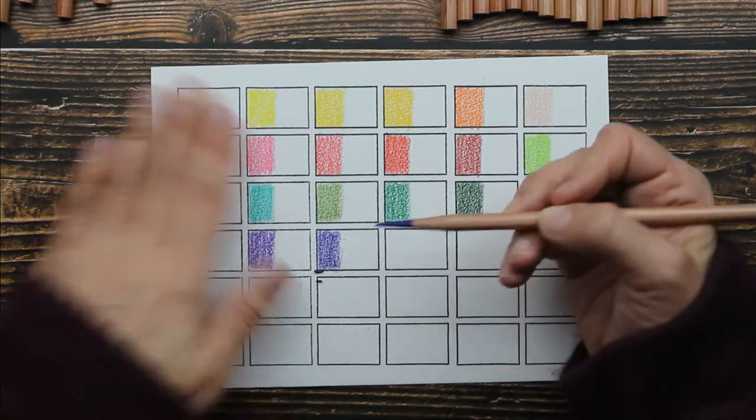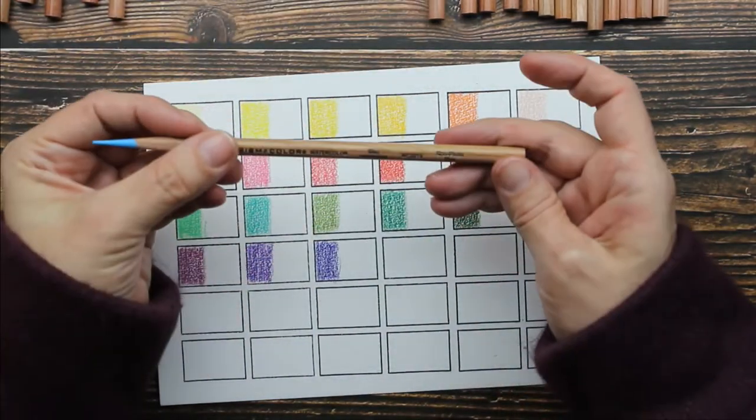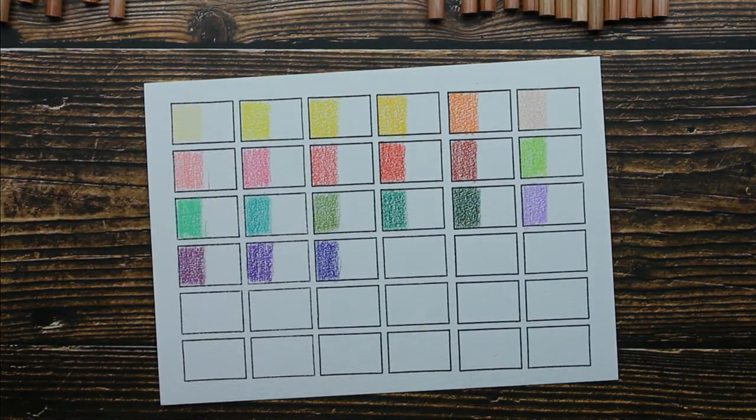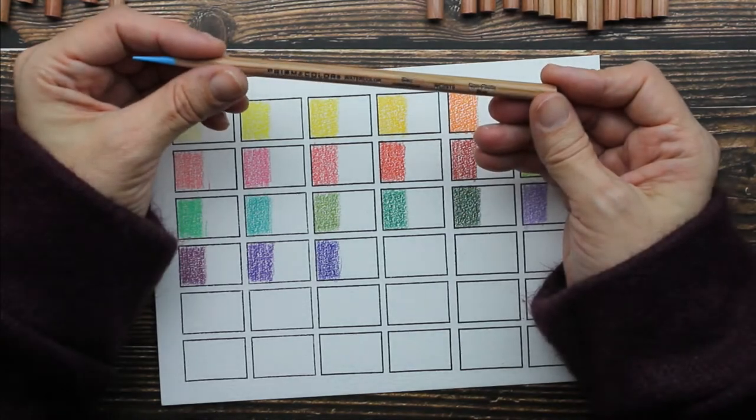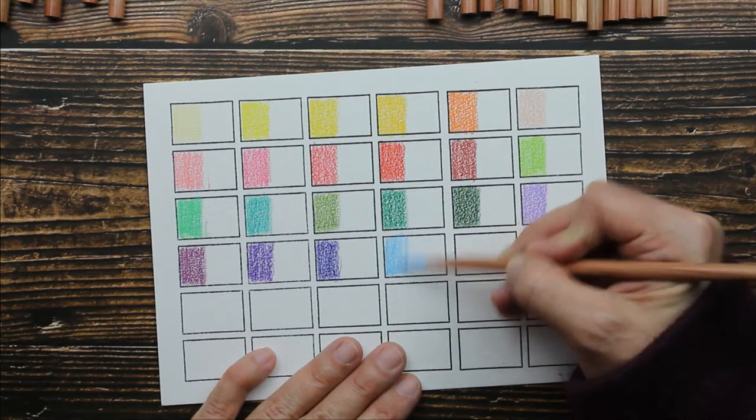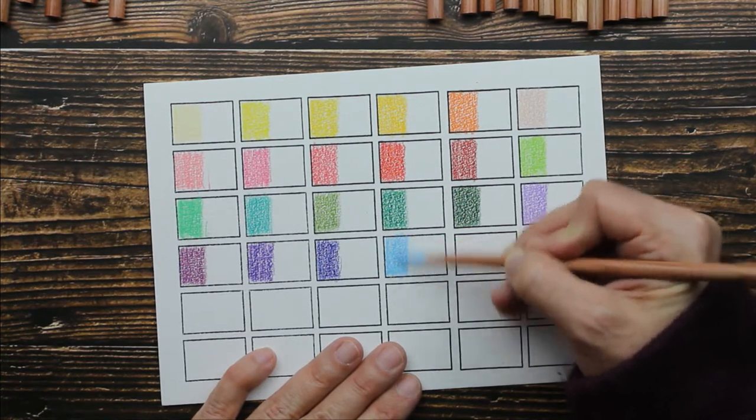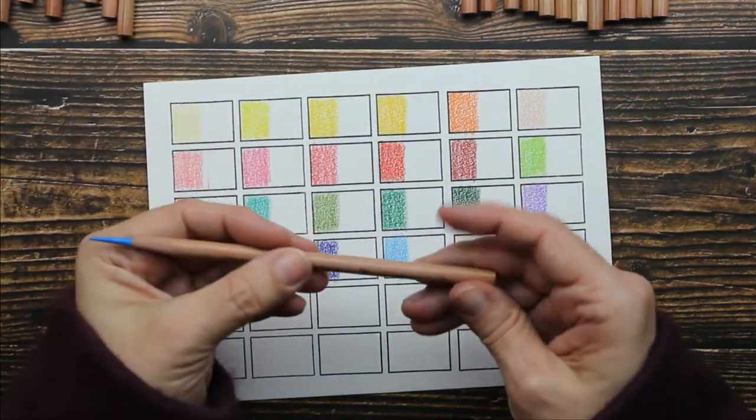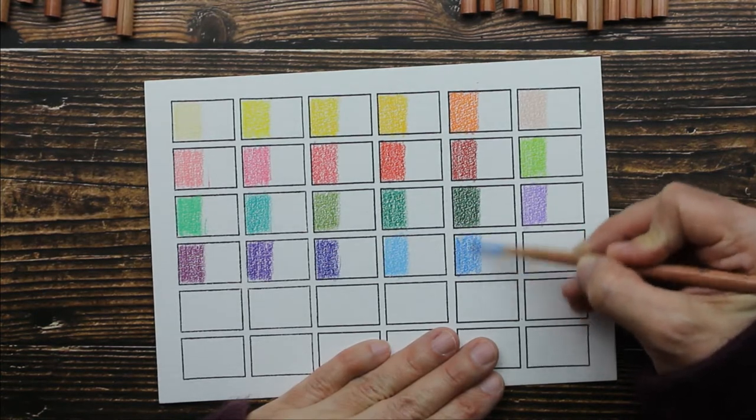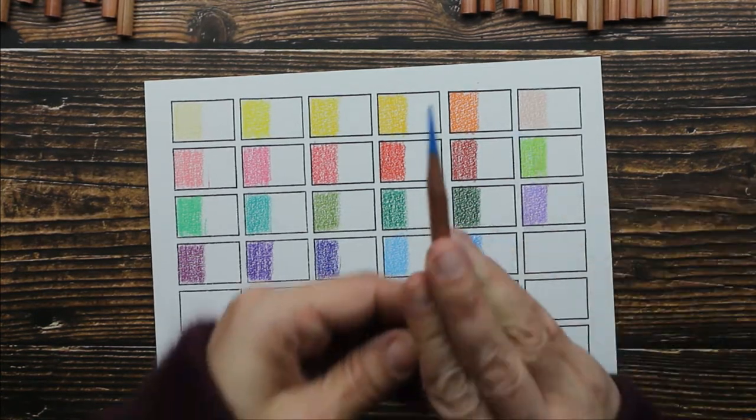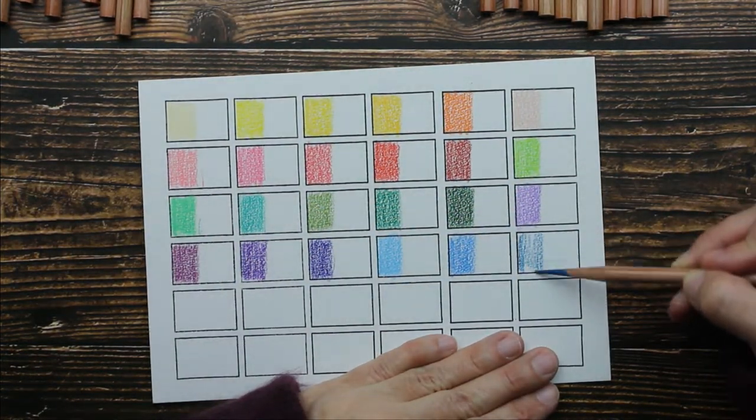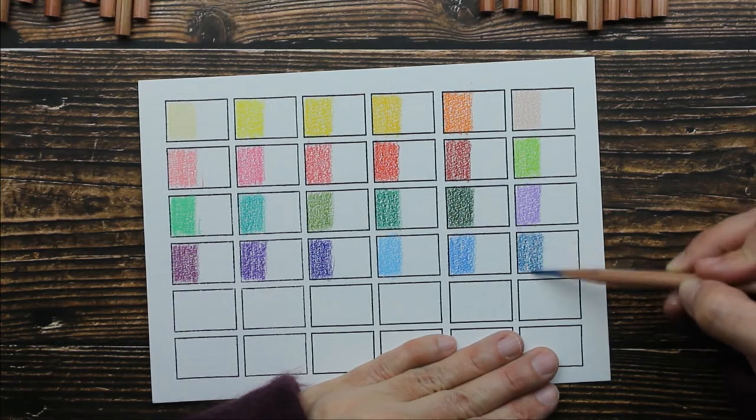Next is Violet Blue. And then we have, what does that say? It says Non Photo Blue. That's new to me. I've never heard of Non Photo Blue before. Now we have True Blue. And Peacock Blue. I love Peacock Blue. It's pretty. It's a good blue.